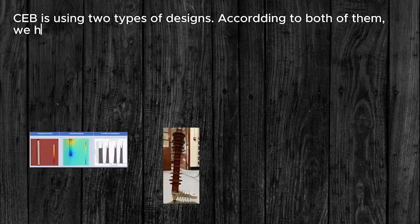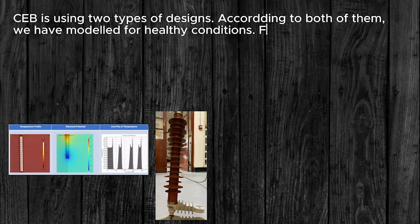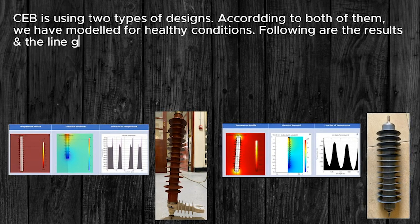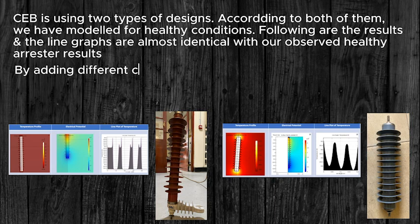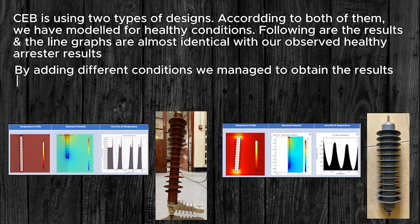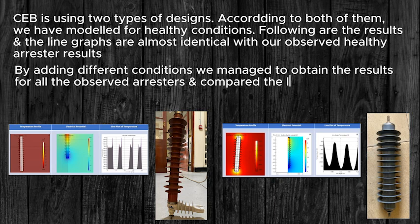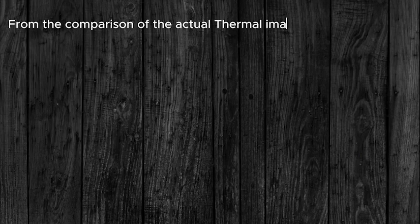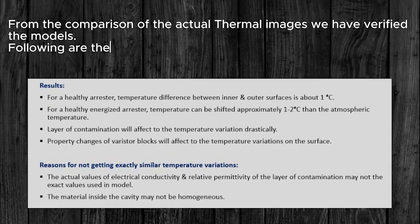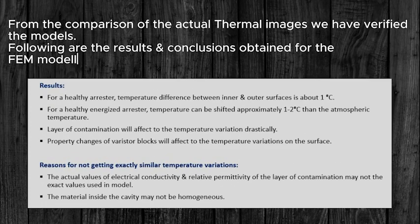CEB uses two types of designs, and we have modeled both for healthy conditions. The resulting line graphs are almost identical to our observed healthy arrester results. By adding different fault conditions, we managed to obtain results for all observed arresters and compared the line graphs with actual temperature variations. From this comparison with actual thermal images, we verified the FEM models.